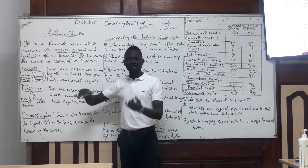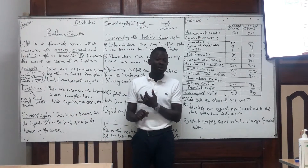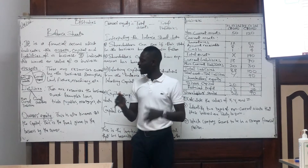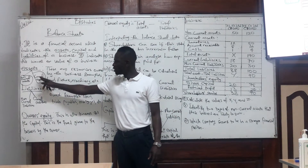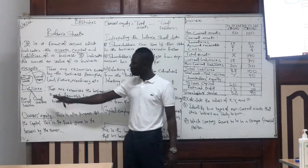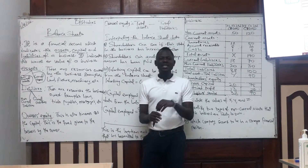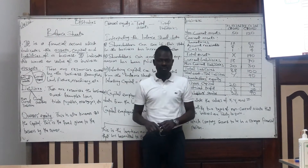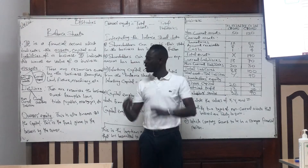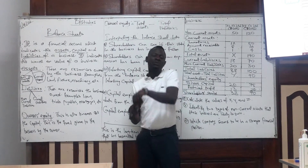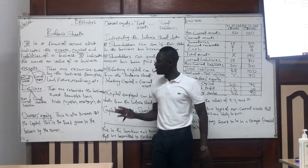Then we go to liabilities. These are the resources the business is owing to a third party. Whatever you owe to a third party is a liability, though you are using it in the business — but it does not belong to the business. That's why we call it a liability.